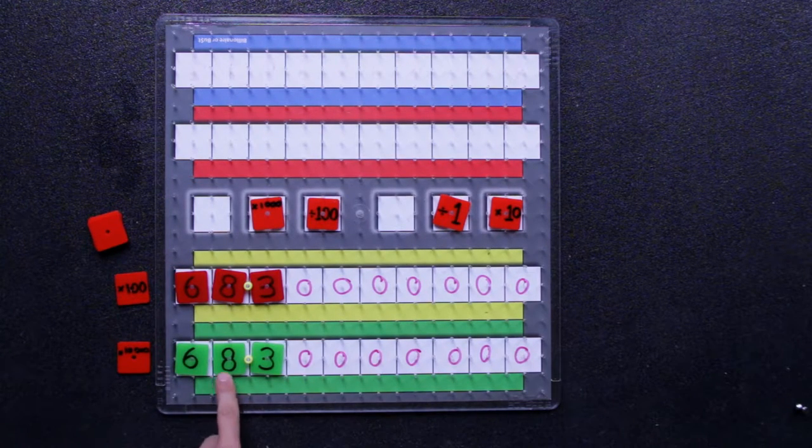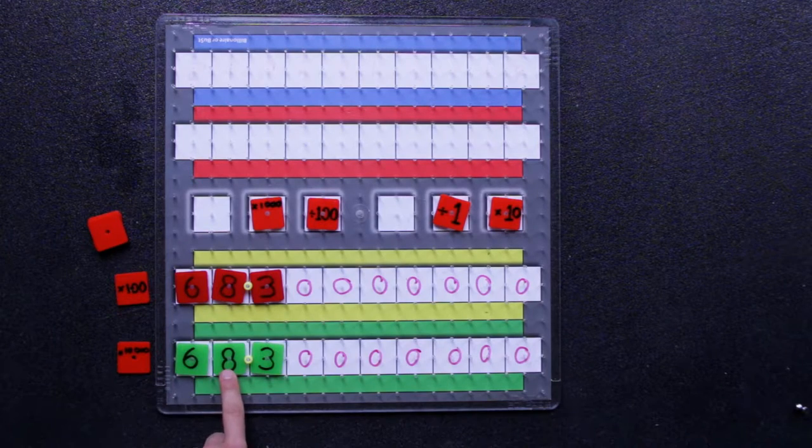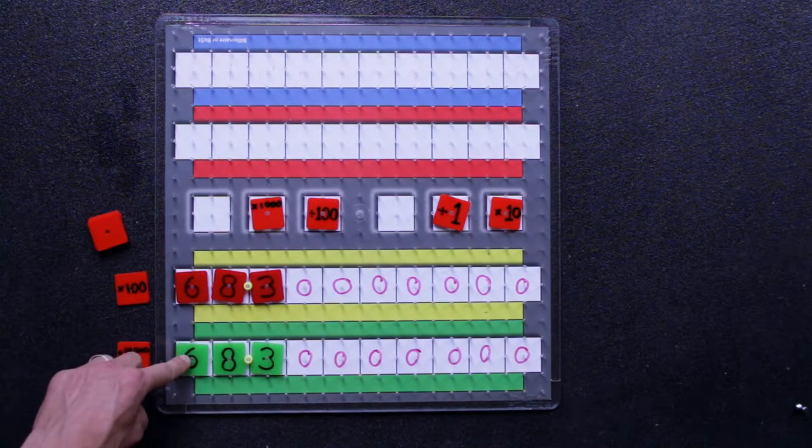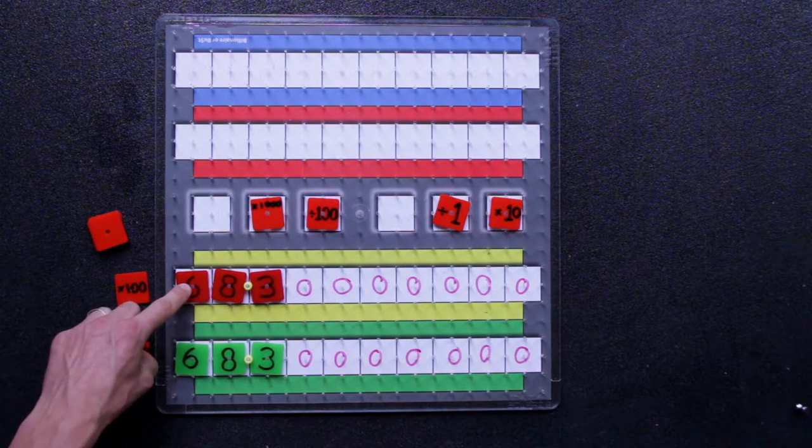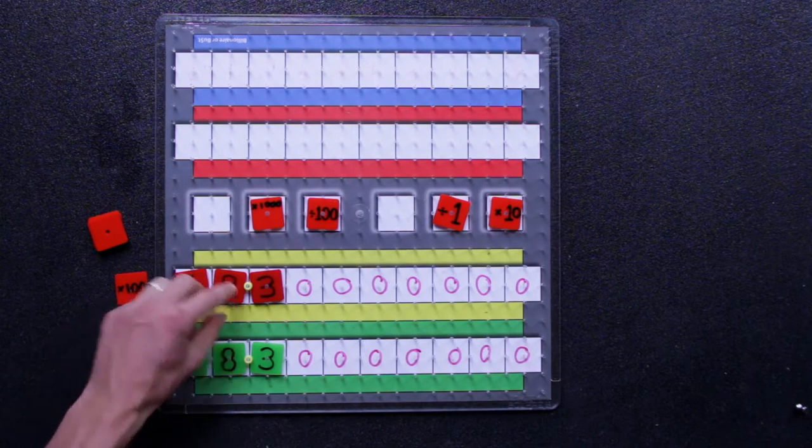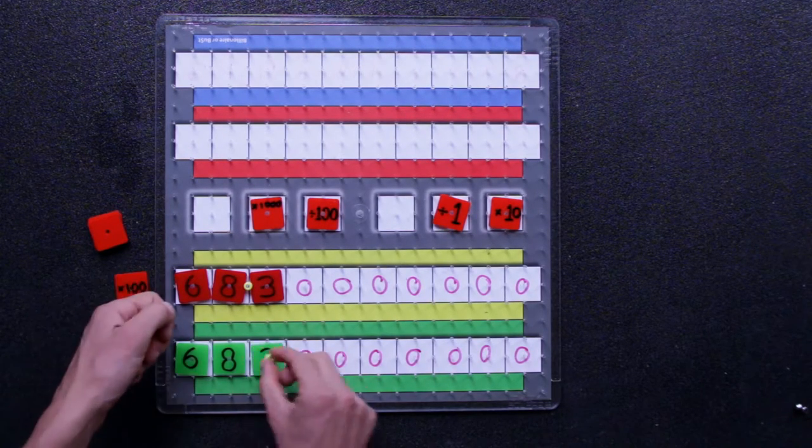So green has been caught here, which means they swap roles and now green becomes the chaser and red becomes the runner.